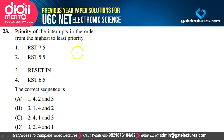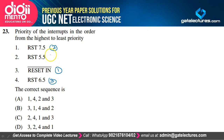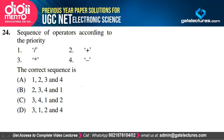For the priority of 8085 interrupts from highest to lowest: RESET-IN bar has the highest priority, then RST 7.5, then RST 6.5, and then RST 5.5. Option B satisfies the explanation and is the correct option.